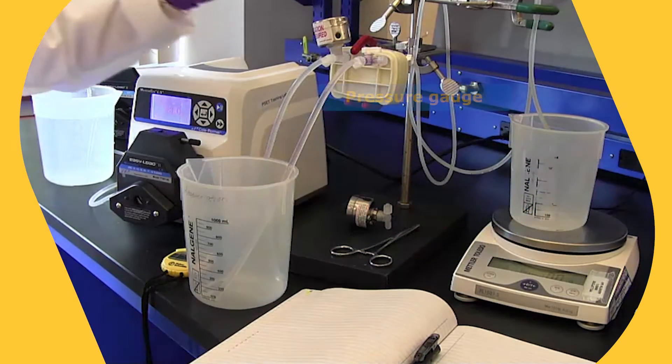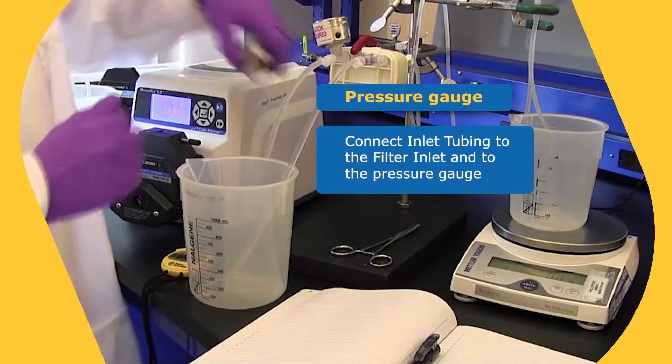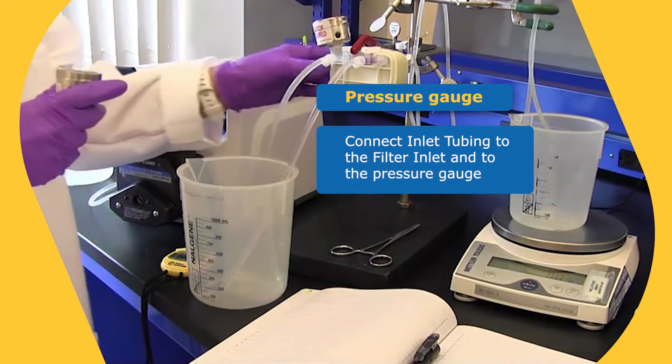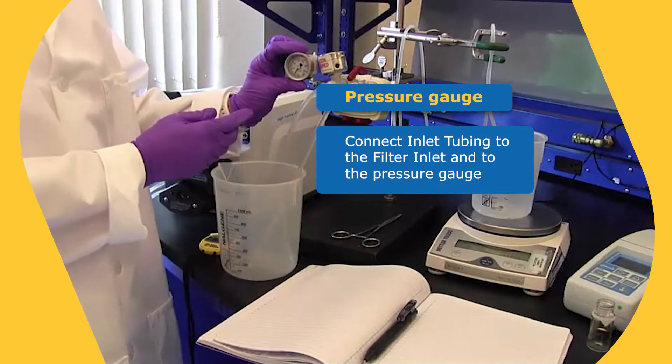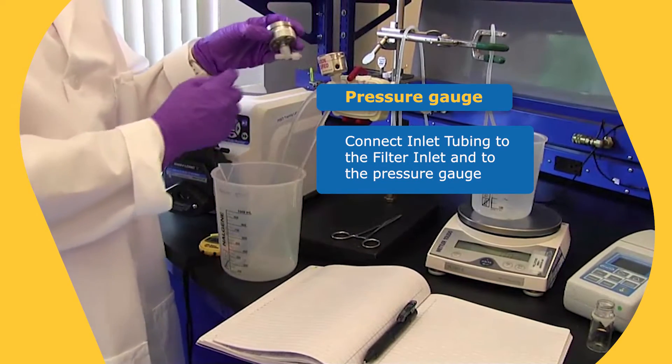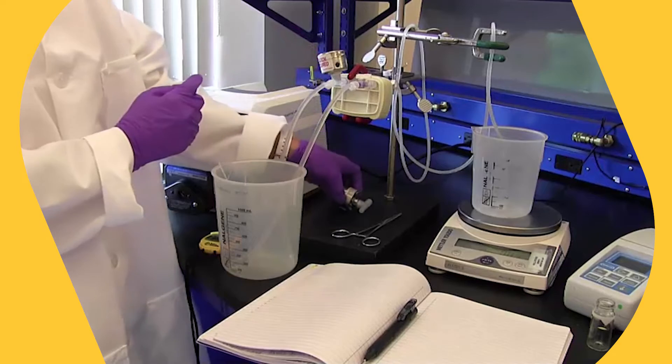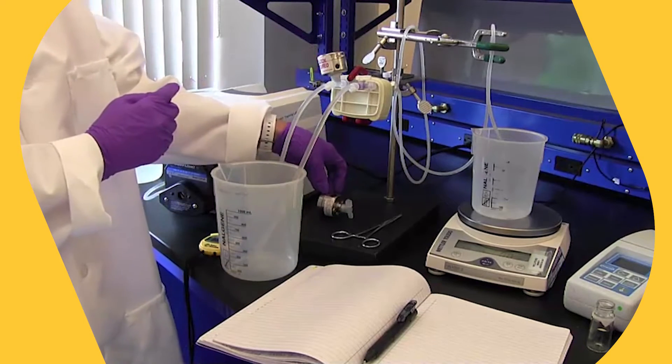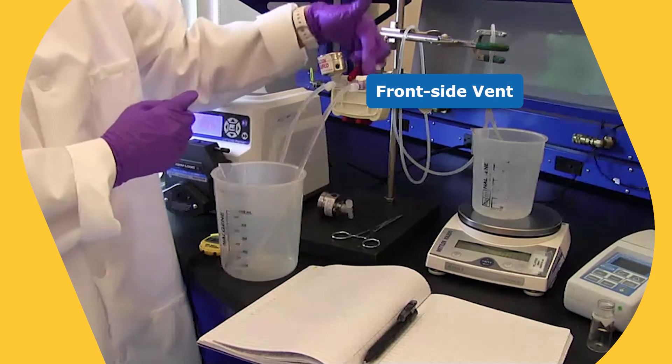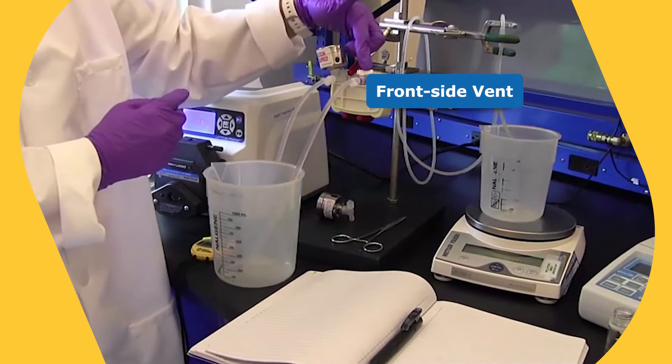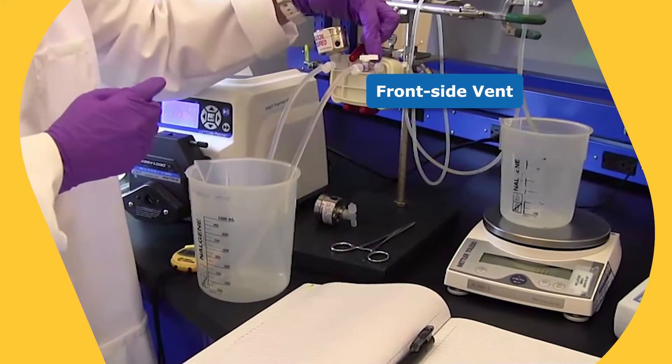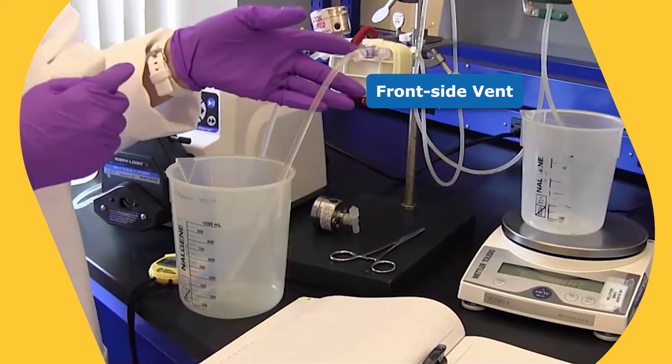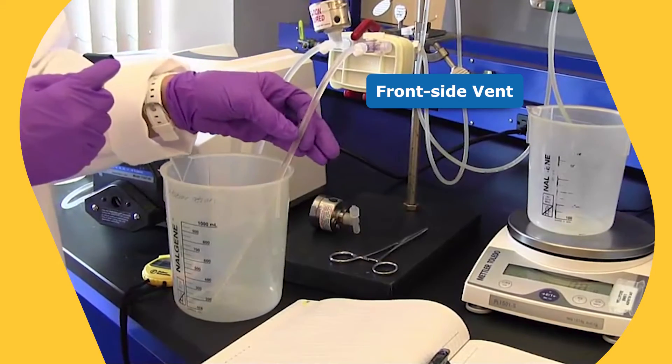So then we also have a pressure gauge here, which is connecting the inlet tubing to the inlet of the filter. So you see you would have your pressure gauge. This is connected to the filter using a lure T. Also on the front side of the filter is the vent. So here we have a three-way lure valve. You can use a two-way lure valve. You could actually just connect the tubing directly to the filter and use some type of clamp.